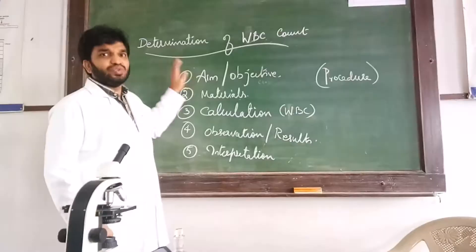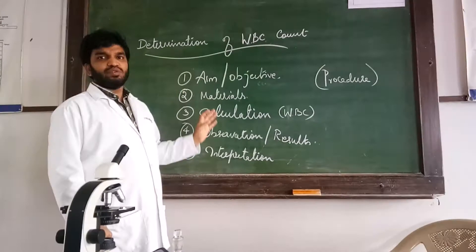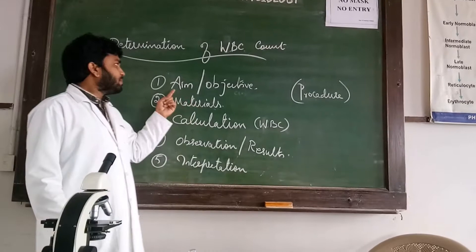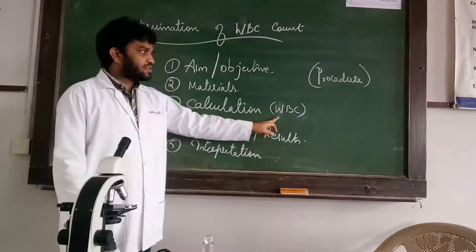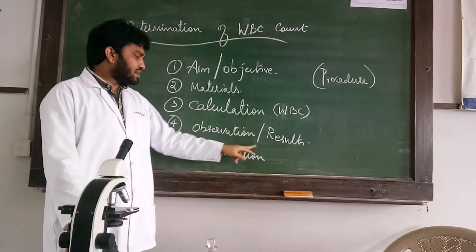What are things you have to mention in your paper, especially for practical examination point of view: aim, objective, materials, calculation, remember especially WBC only because our practical is WBC count, observation, results, interpretation.